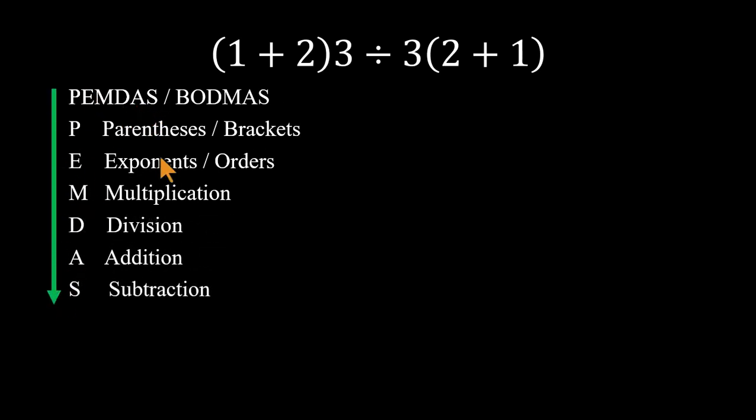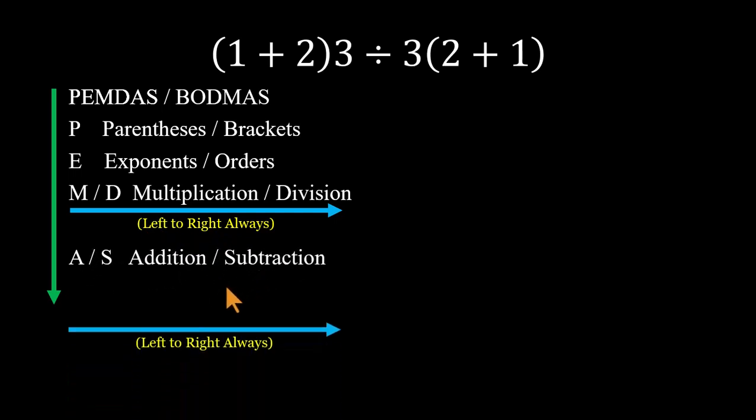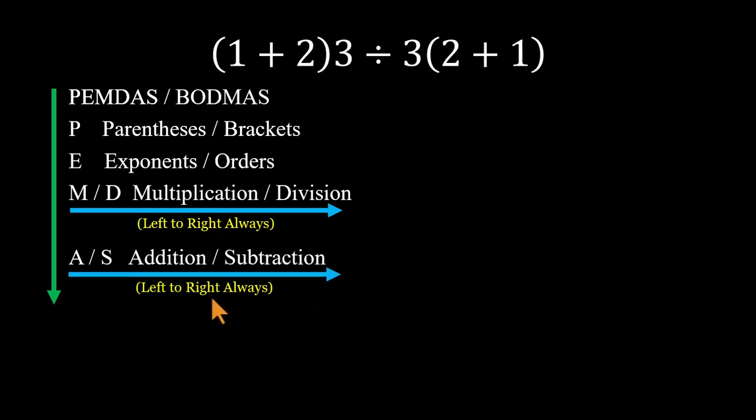Now here's something important. Multiplication and division share the same priority. When two operations have equal rank, you solve them from left to right. The same holds for addition and subtraction. Left to right, always.